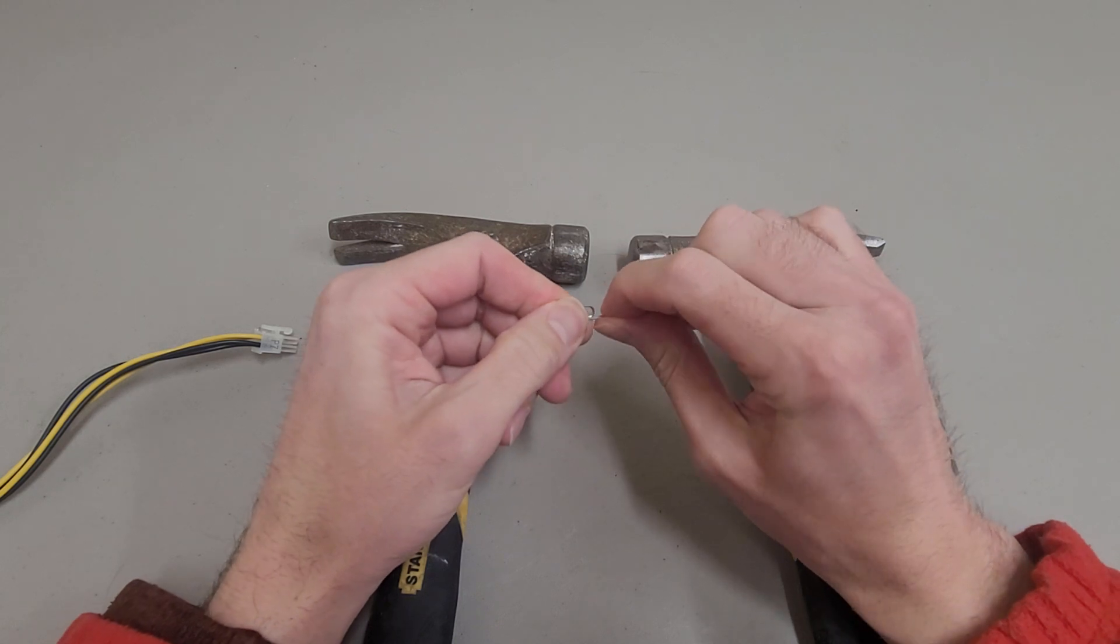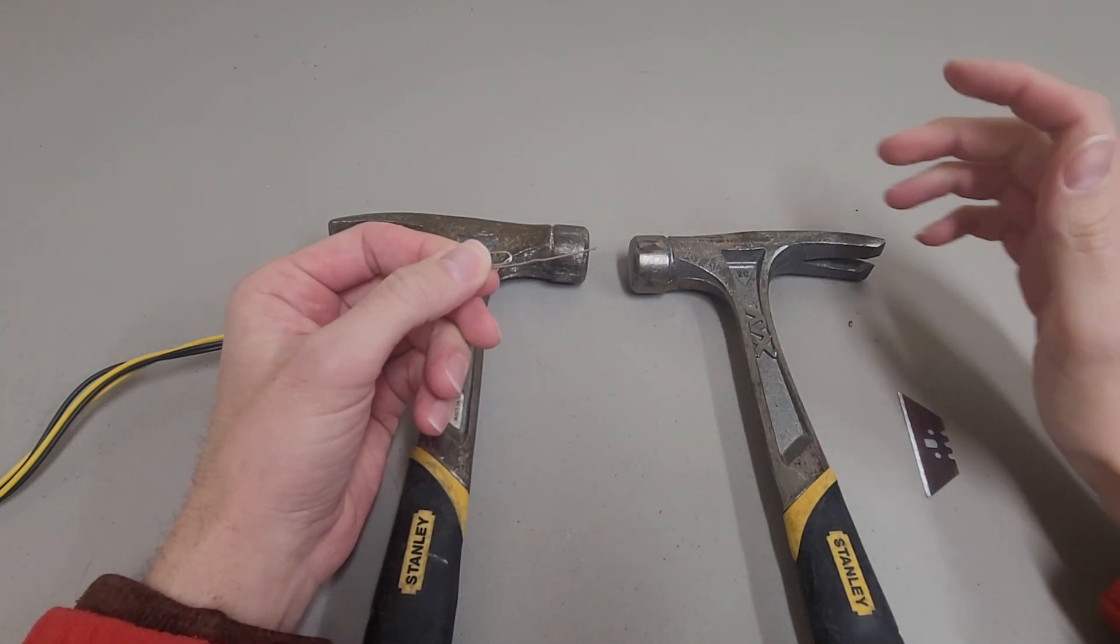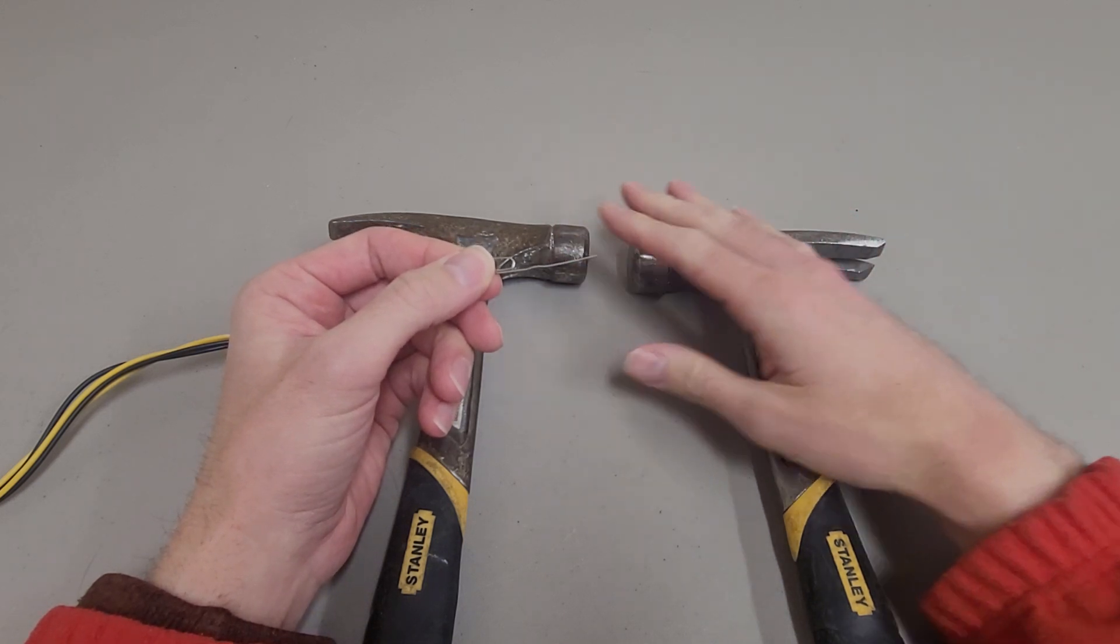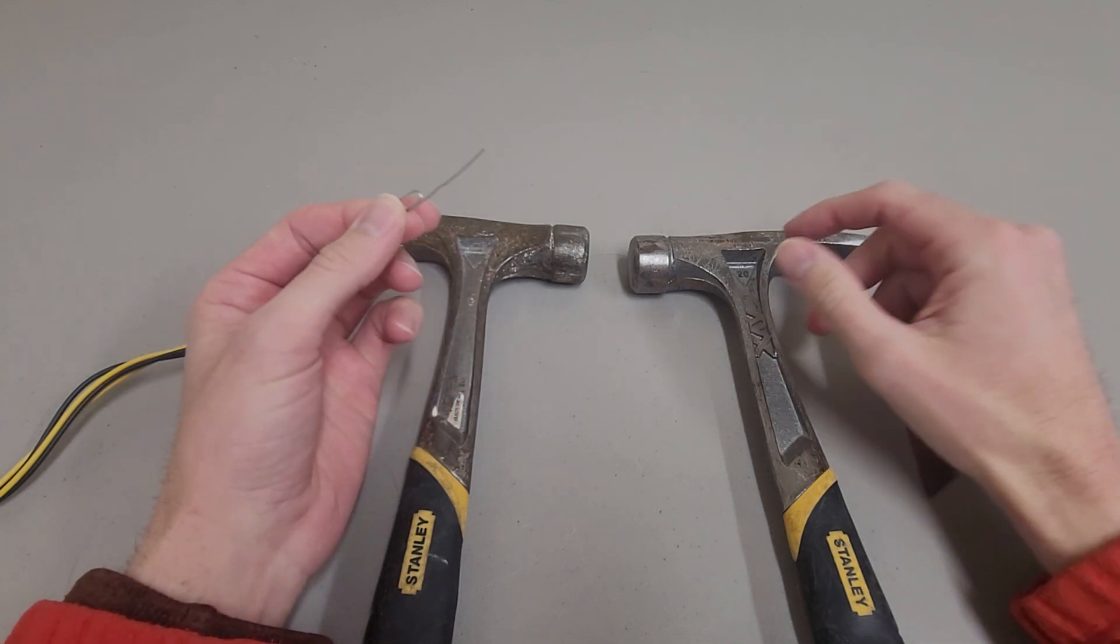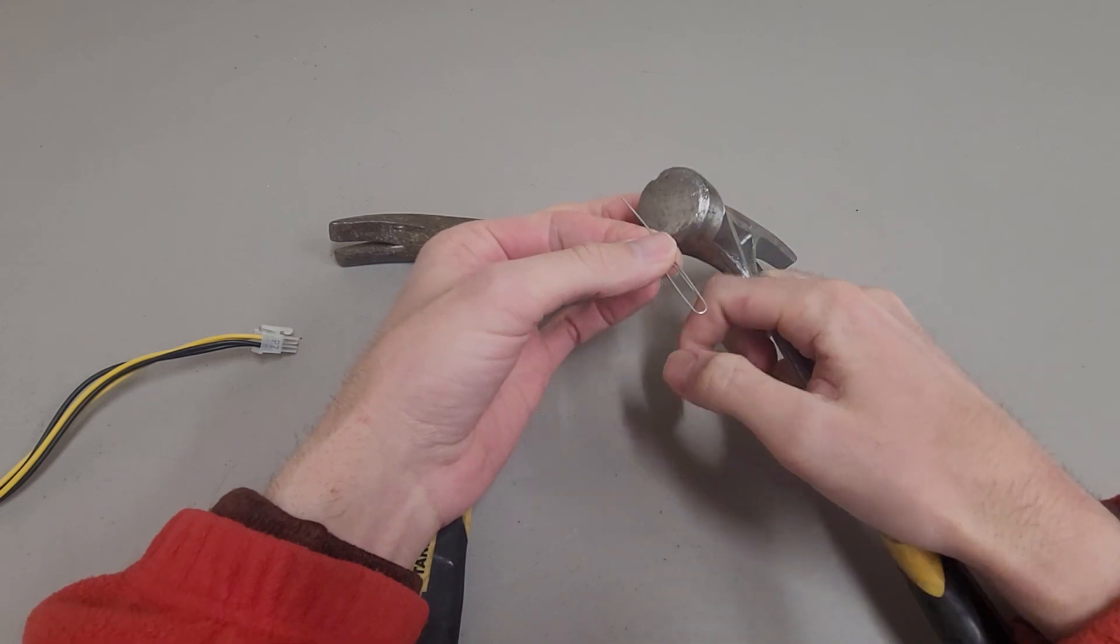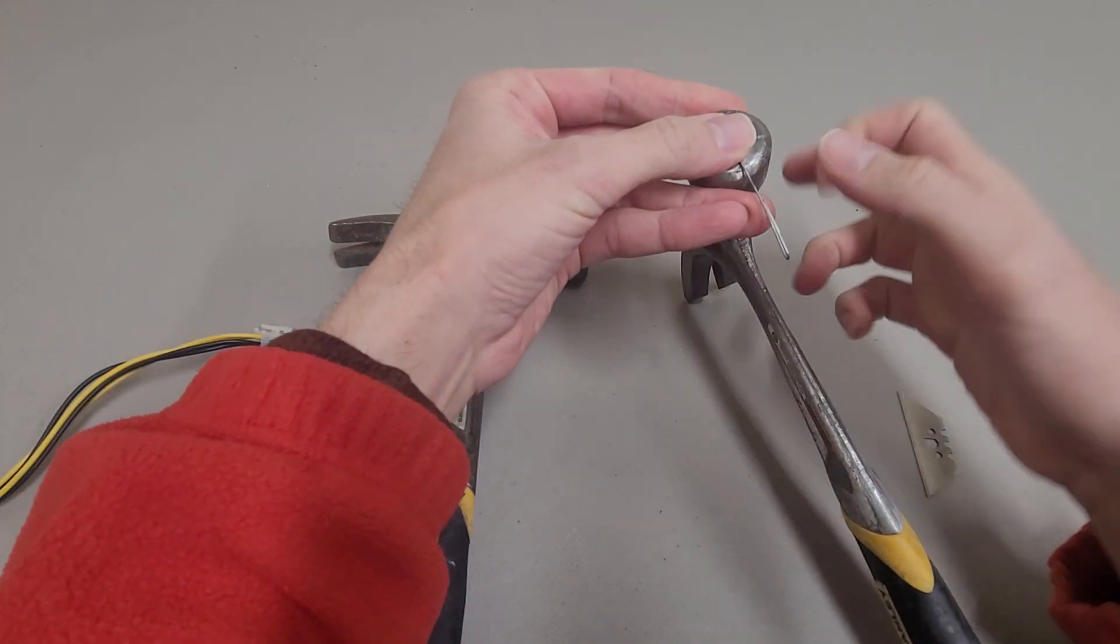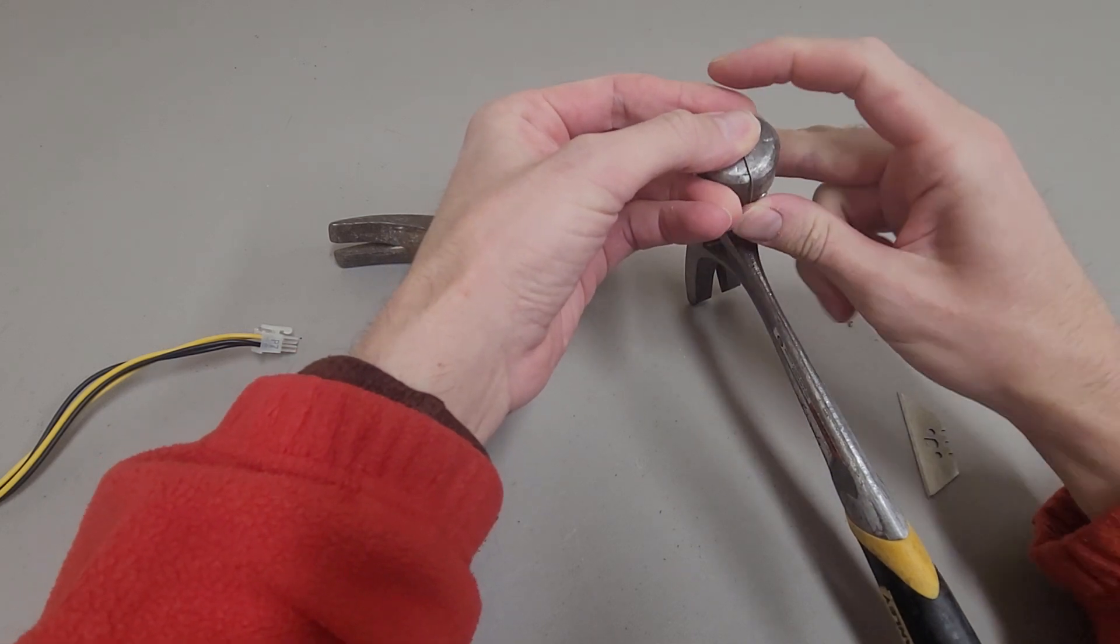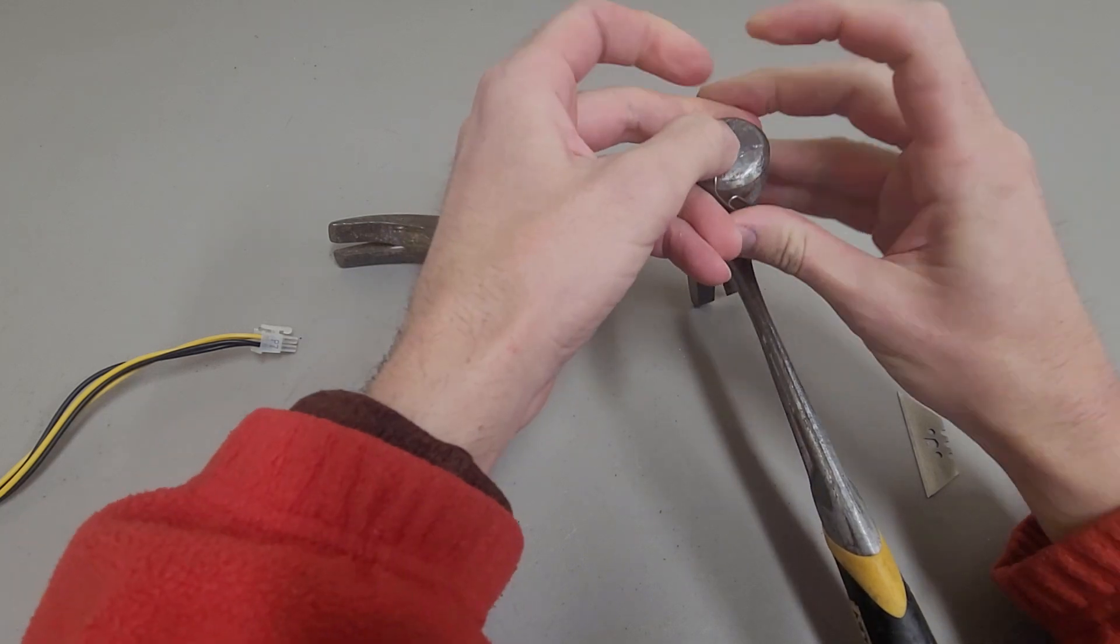I take it and I'll bend it out like this. The reason I have two hammers here is because I need something with a hard flat surface. I'm doing this through the camera so we'll see how good I do. I'm just going to bend it so I don't have to hold it, leave it at a little bit of a right angle to make it easier to work with.